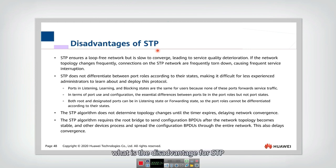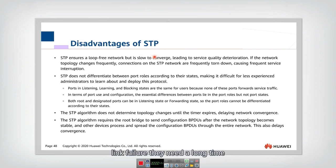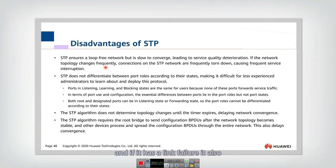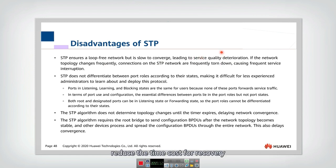First, we need to see what the disadvantages of STP are. The current problem with STP is that when there is a link failure, it needs a long time to recover. It is slow to converge, and this leads to severe service quality deterioration. If there is a root switch failure, it needs 50 seconds to recover. If there is a link failure, it also needs 50 seconds to recover. So this is a long time, and we want to reduce the time cost for recovery.